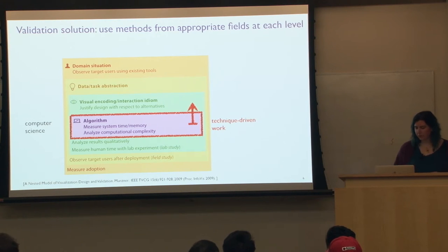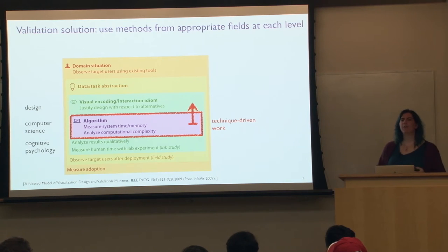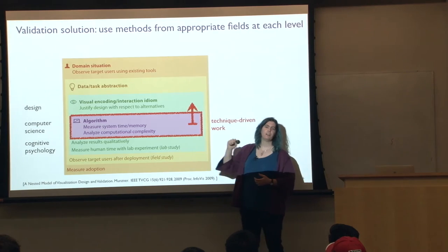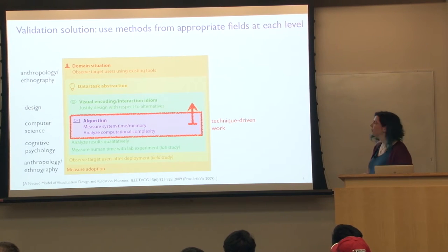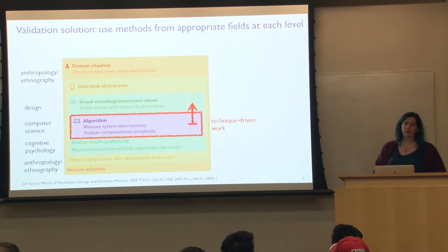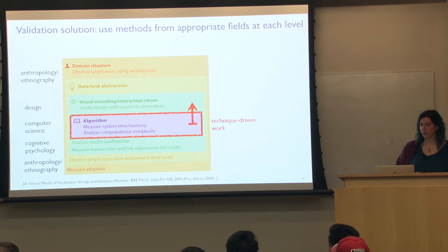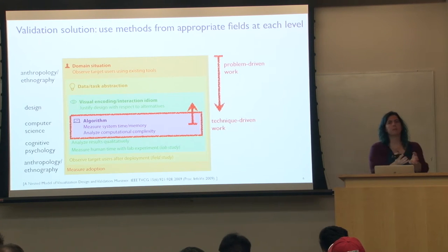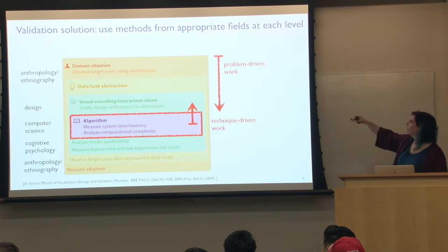There are other flavors of work not necessarily well taught in a CS department. If you're designing something, there are well-known techniques from the design community about understanding the space of alternatives. There are techniques from cognitive psychology about measuring human response time and errors in controlled experiments. Methods from anthropology and ethnography pertain to understanding what users need. Another whole thread is what I call problem-driven work, where you start with a targeted group of domain users and proceed through abstraction, idiom design, and if necessary, algorithm design.